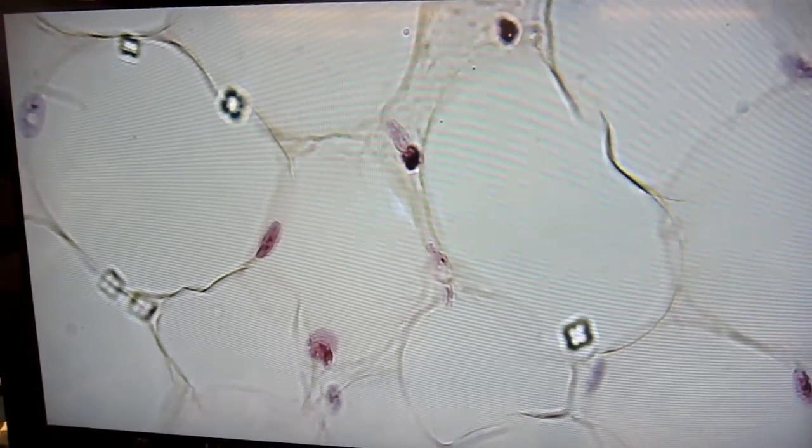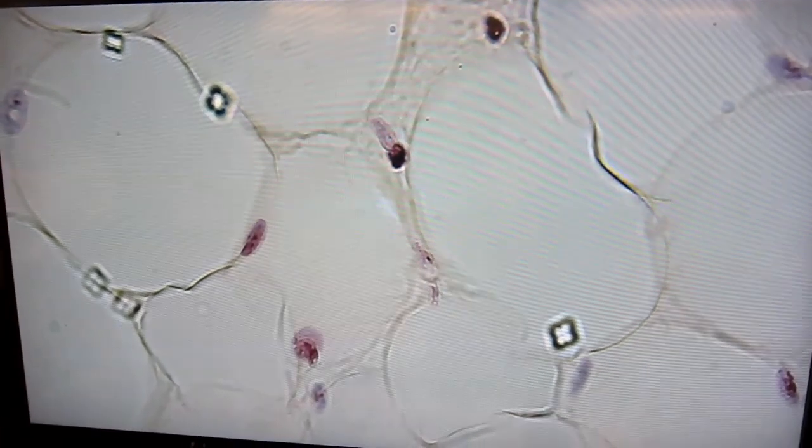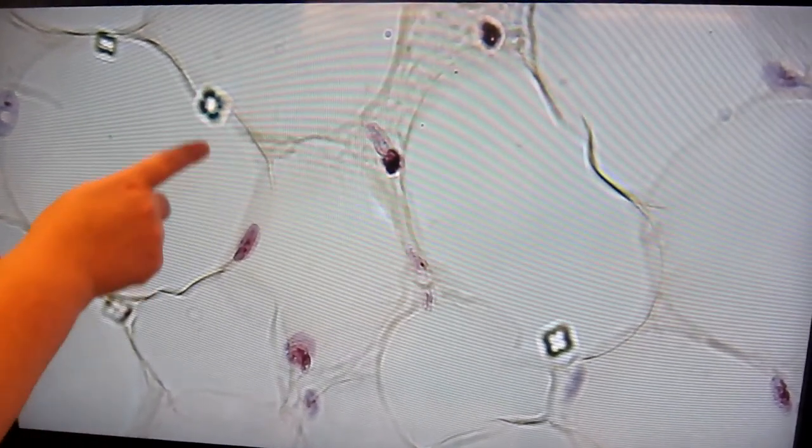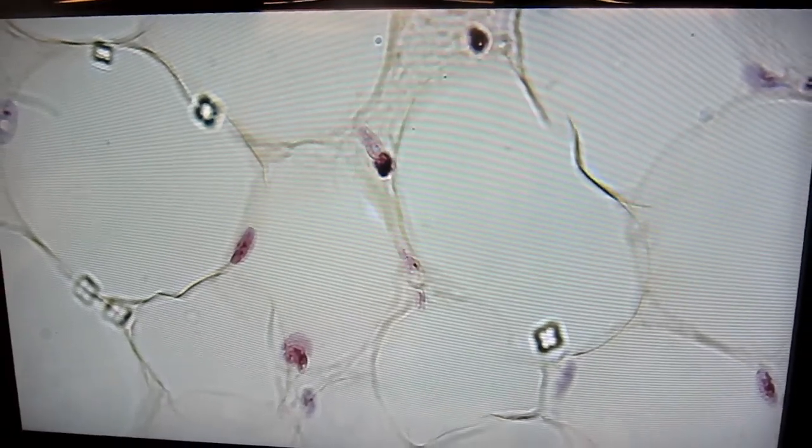Each of these round structures that you see here is an adipose cell or adipocyte. Another way to say that would be that it's a fat cell. In this space that you see here, there used to be triglyceride, a type of lipid, being stored.